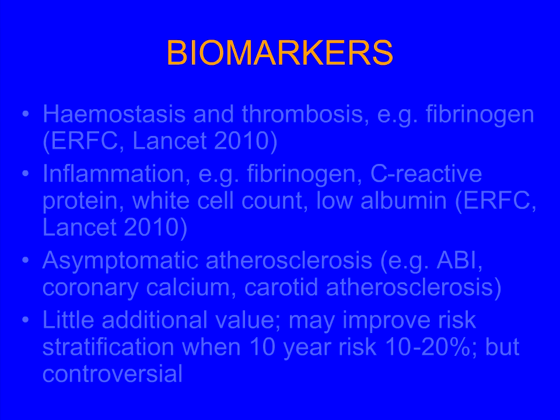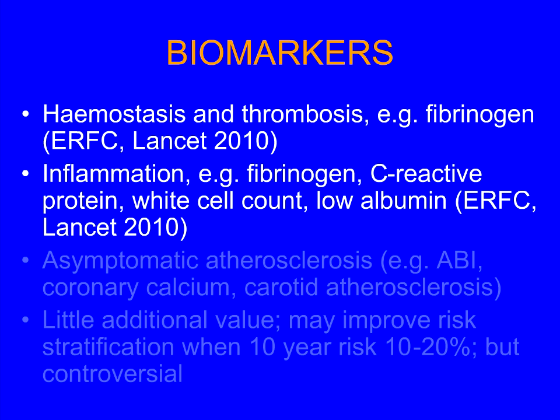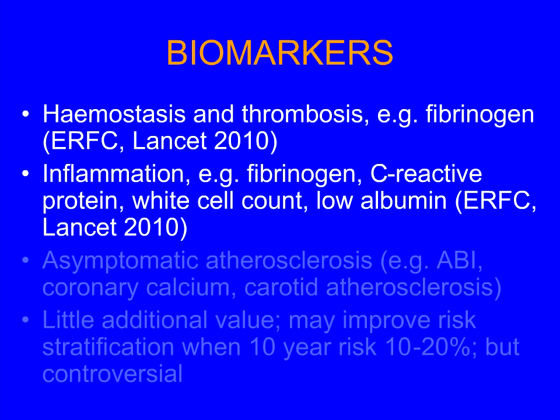Finally, biomarkers. We're all interested in biomarkers of hemostasis and thrombosis. Fibrinogen has been measured in many epidemiological studies, and there's no doubt that the higher the plasma fibrinogen level, the higher the risk of arterial thrombosis. The problem is that this is probably nothing to do with thrombosis per se — it's probably because fibrinogen, like C-reactive protein, white cell count, and low albumin level, are all markers of low-grade systemic inflammation. The data is nicely summarized in the emerging risk factors collaboration paper.